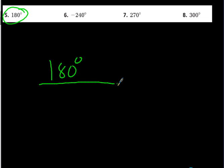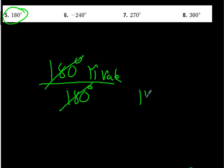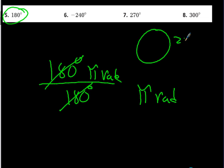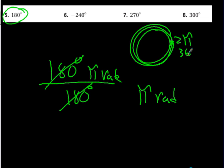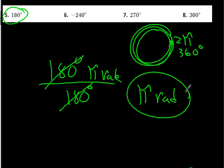Number 5: 180 degrees — that one should be easy. 180 over 180 times pi radians: everything cancels to just pi radians. That makes sense because a full circle is 2π, and half a circle is 180 degrees, which equals pi radians. Number 7: 270 degrees over 180 gives 27 over 18, which reduces to 3 over 2, so the answer is 3π/2 radians.